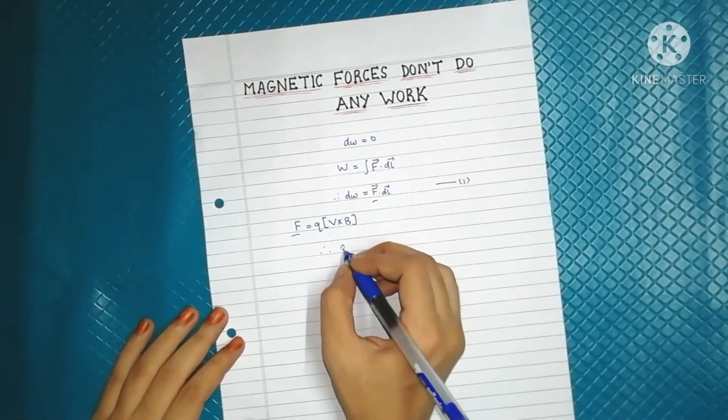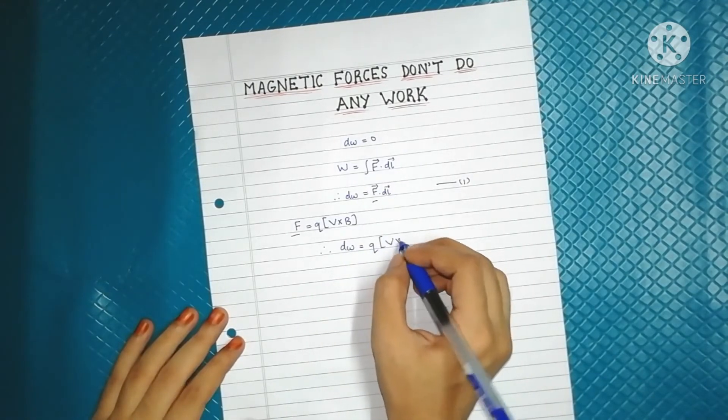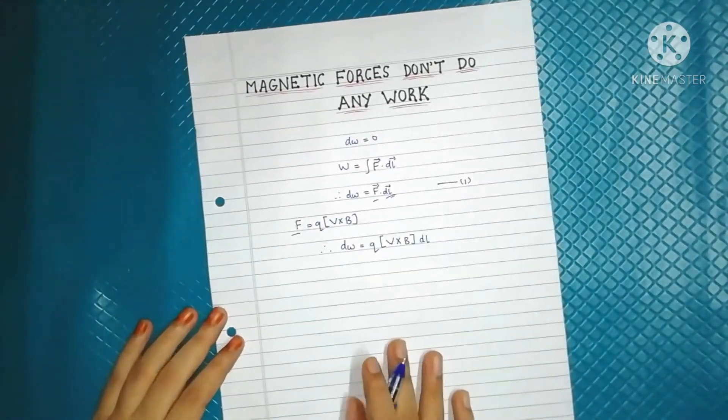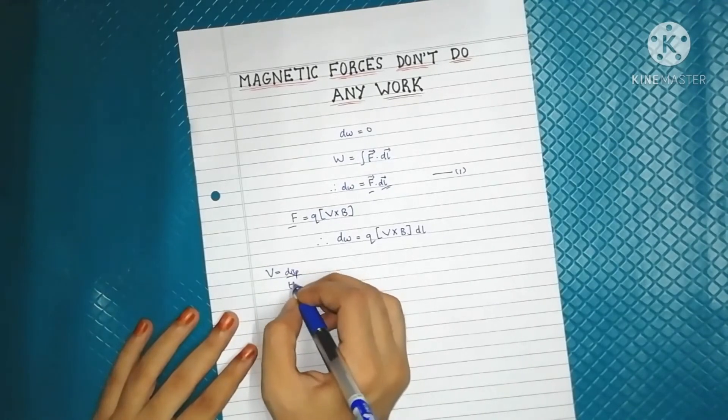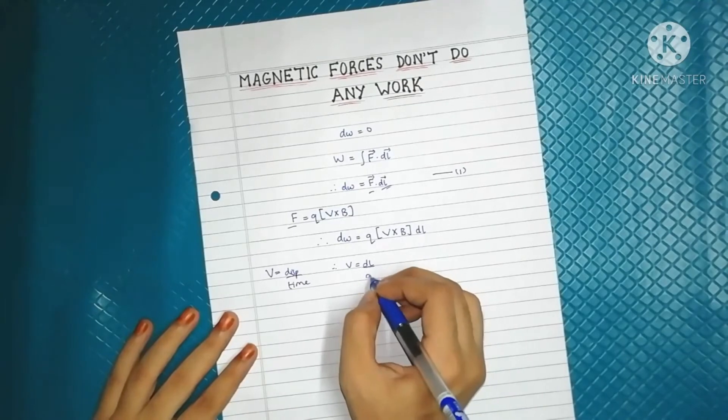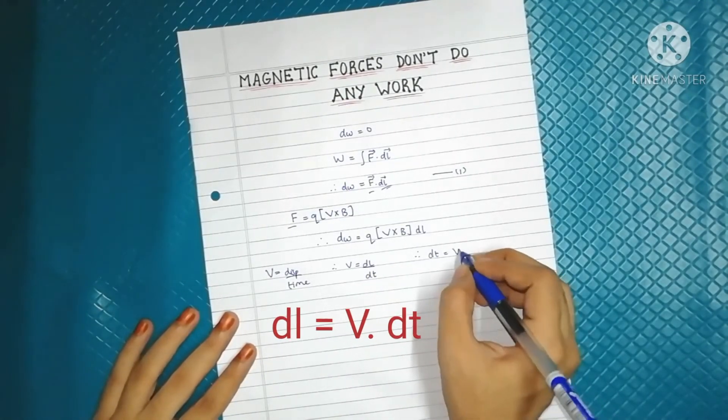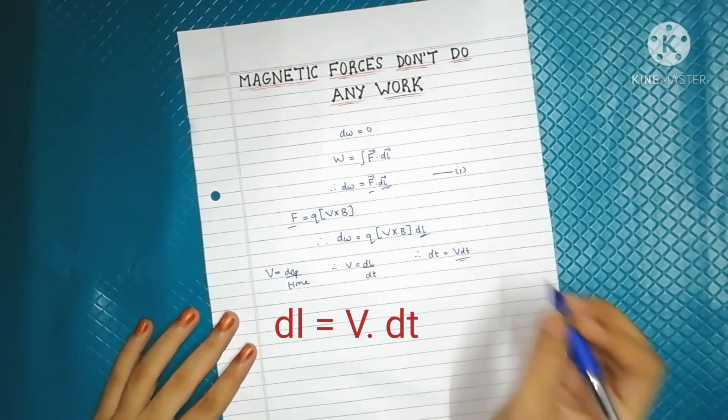Therefore dW is equal to q into v cross B and this dl as it is. Now velocity is equal to displacement upon time, therefore v is dl by dt and dl can be written as the product of v dt. In place of dl we will write v dt.